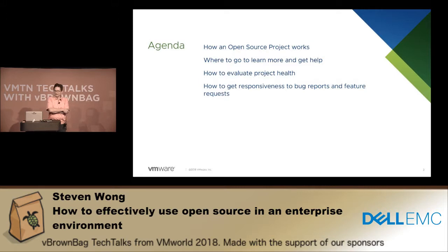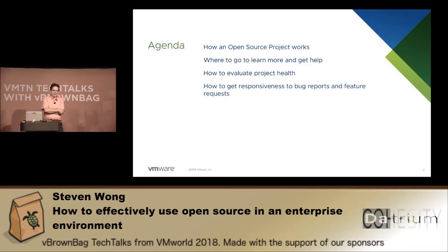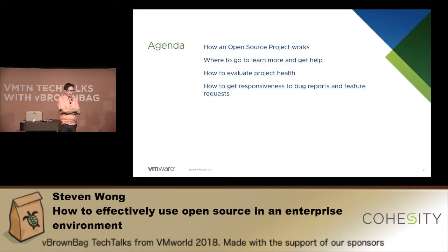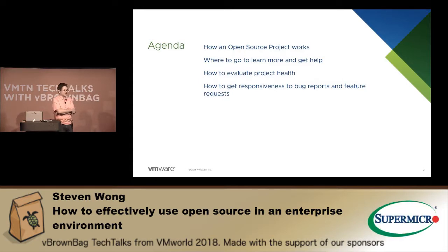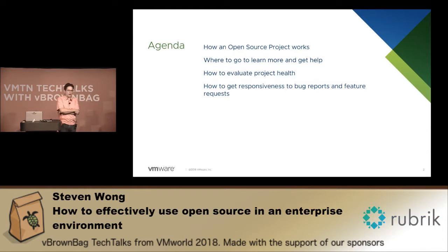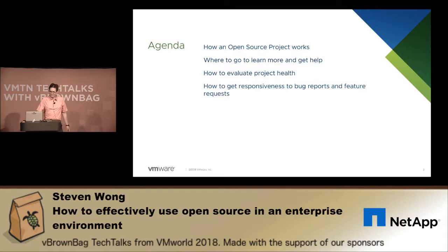I'll cover where to go to get more help, how to get responsive treatment when you have bugs to submit or feature requests, and how to evaluate the health of an open source project. There are probably literally tens of thousands of open source projects, and for any given use case you might find four or five of them. You can look at things that will tell you whether a project is alive and well with a growing community, versus one that has one foot in the grave.